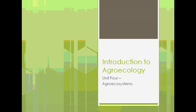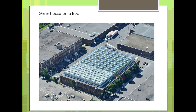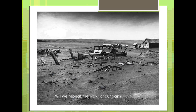Welcome back to Introduction to Agroecology. This is the fourth unit and we're going to talk about different types of agroecosystems that exist today. This is a picture of a place in Montreal, Canada — a greenhouse they built on top of an old office or factory building. It's a functioning greenhouse, and I thought it was an interesting picture to show that agroecology can come in many forms, shapes, and sizes.